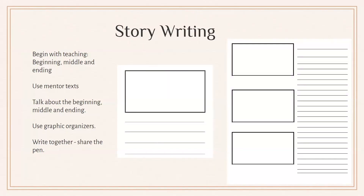Story writing, sometimes tackled in grade one, involves helping students understand beginning, middle, and ending — this is in the curriculum. Mentor texts are great for supporting this, where we talk about what happened in the beginning, middle, and end. Fairy tales are also a great way since students who've been read fairy tales will remember them. We can use graphic organizers, draw pictures of what happened at each part, and then write sentences to go with the pictures.